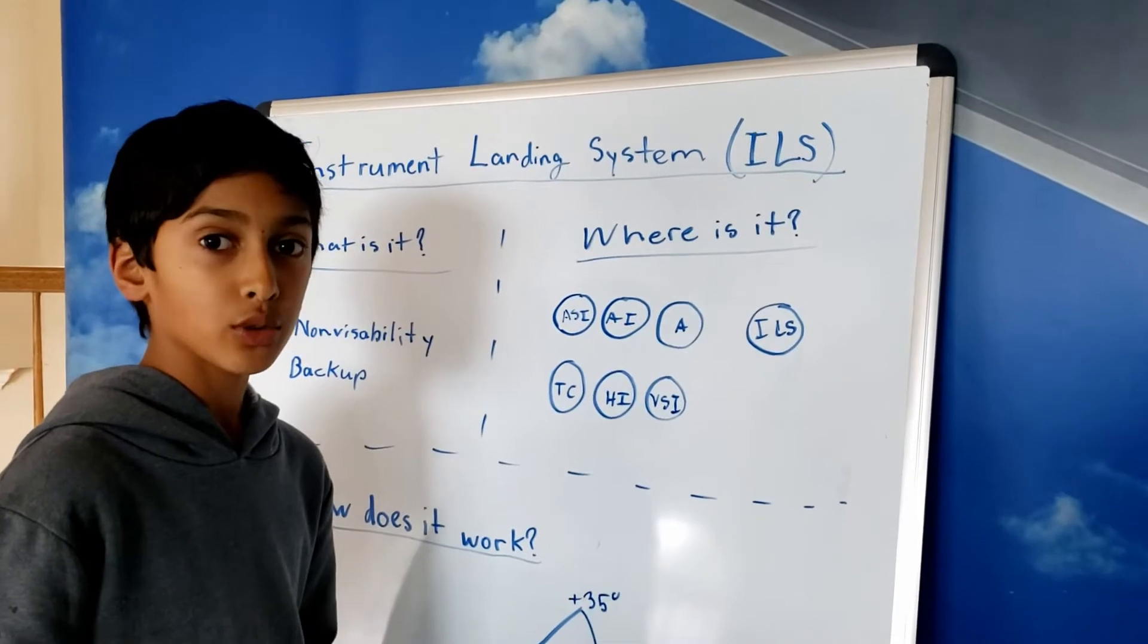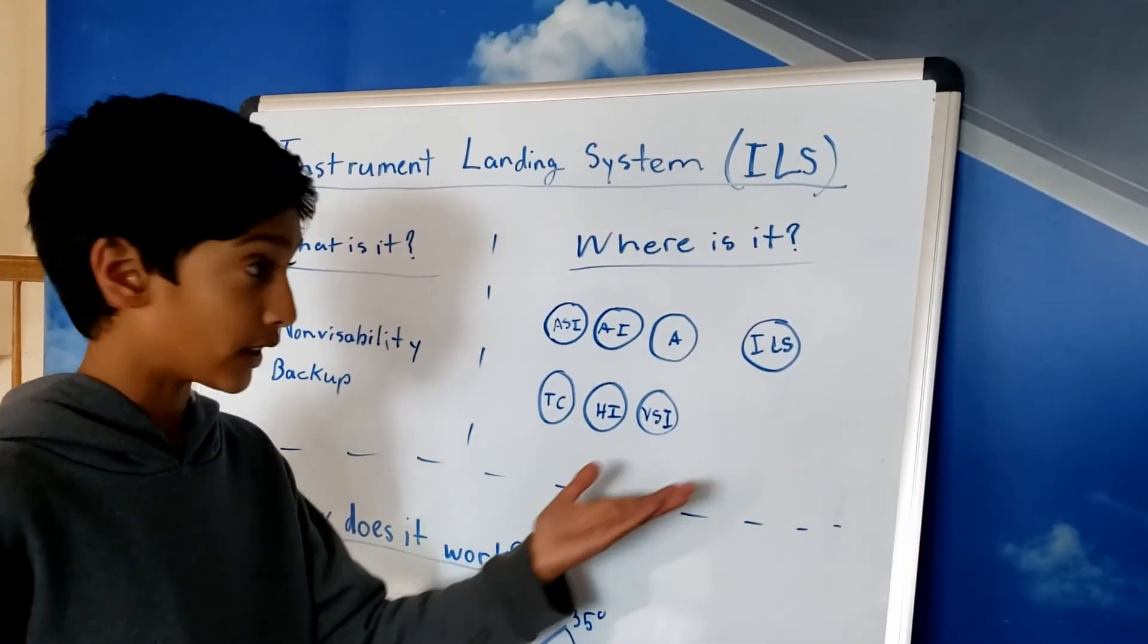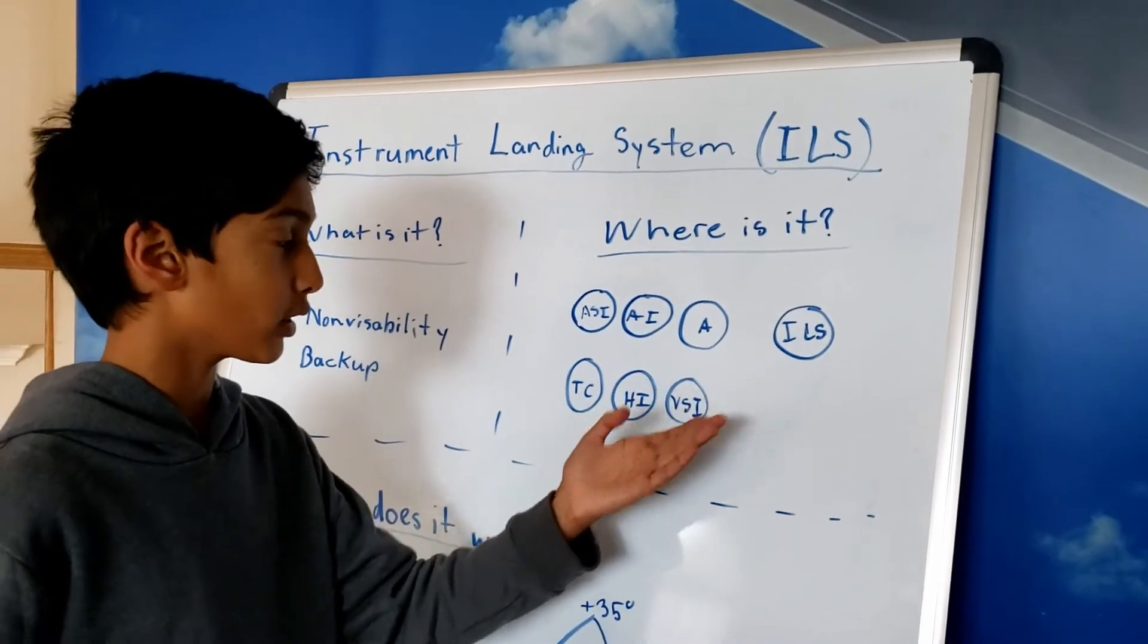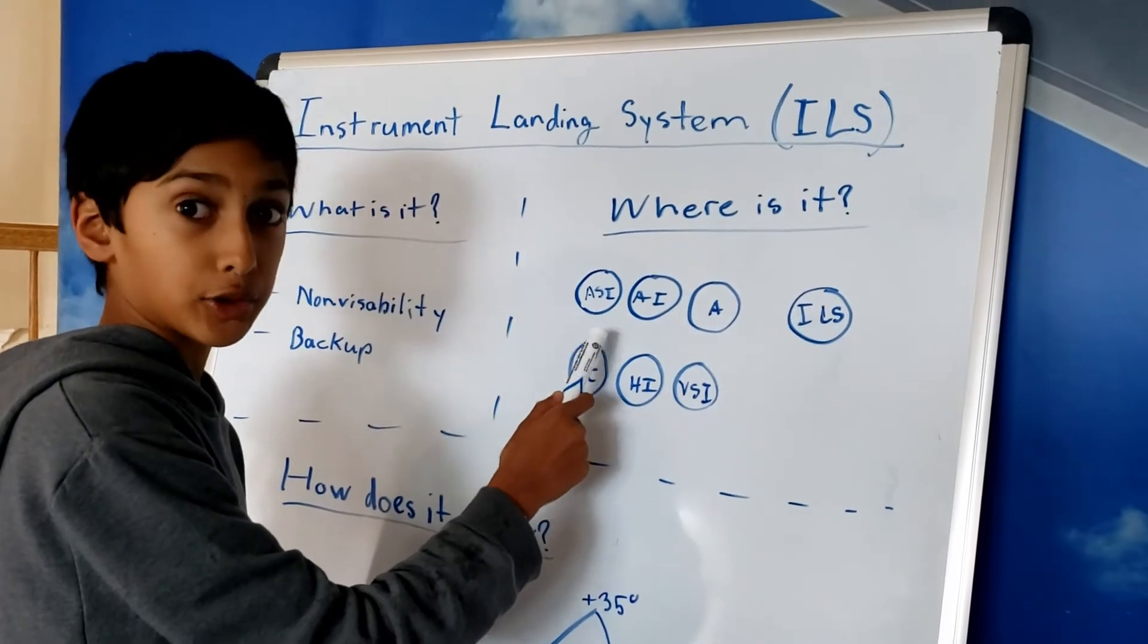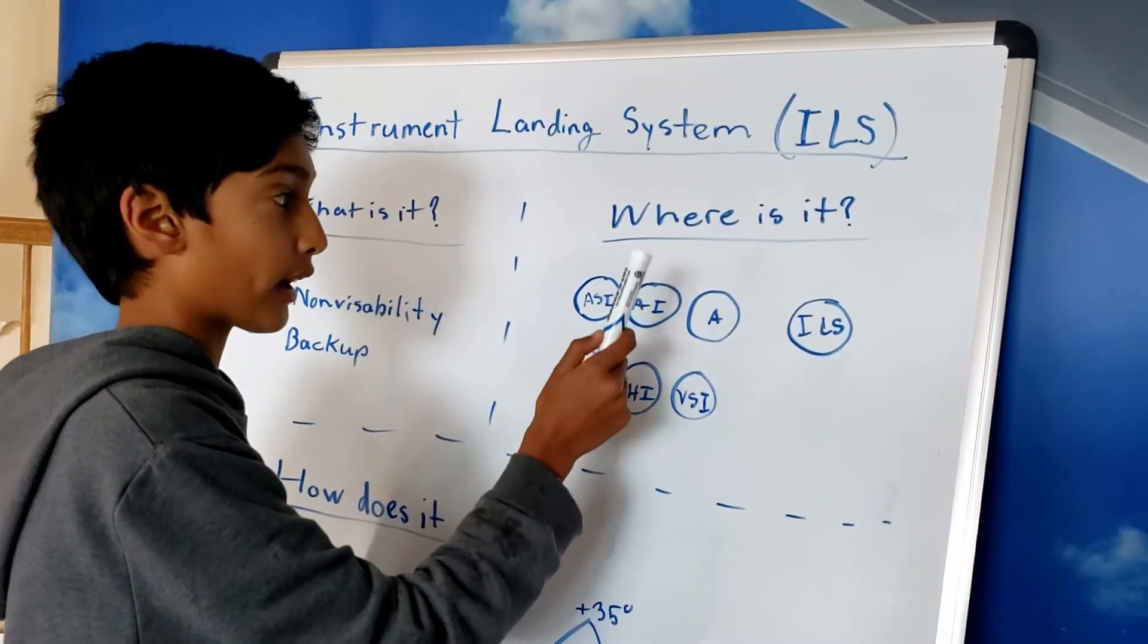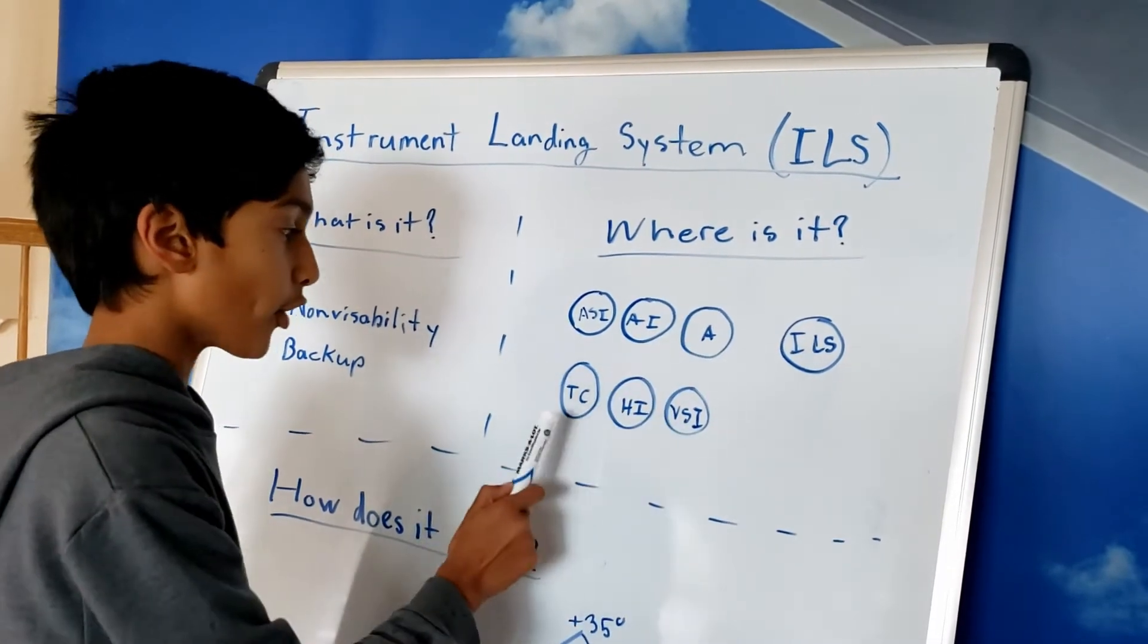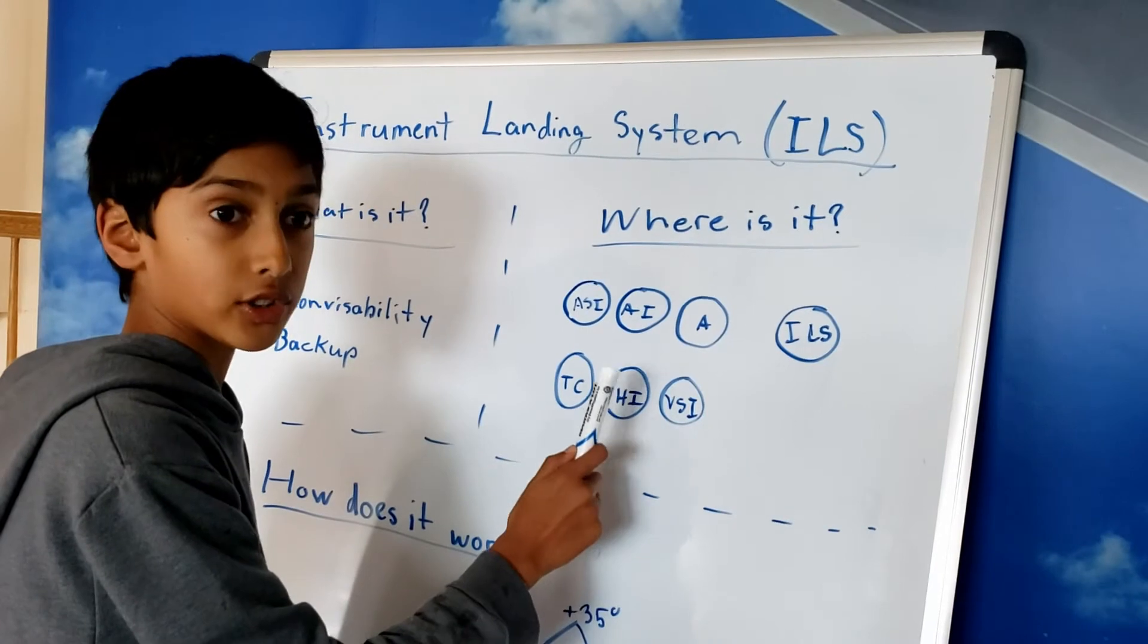Now, let me describe to you where the ILS instrument is in the Cessna 172. So we've got our six pack with our airspeed indicator which shows our speed in air, our attitude indicator, our altimeter, our turn coordinator, our heading indicator, and our vertical speed indicator.